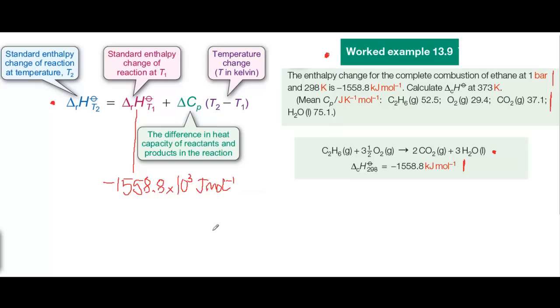T2 is 373, and delta H at T2 is what we're trying to find. So delta H at 373 is what we're trying to calculate. T2 minus T1 is just 373 minus 298, which comes to 75 Kelvins.